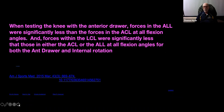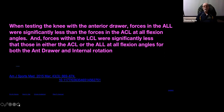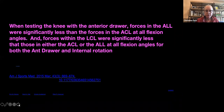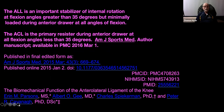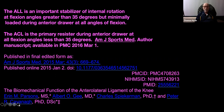The forces of the ALL were significantly less than those of the ACL at all flexion angles, and forces within the LCL were significantly less than those in either the ACL or the ALL at all angles of flexion. Both the anterior drawer and internal rotation would show signs of decreased forces as well. The ALL helps stabilize internal rotation at flexion angles greater than 35 degrees and is a primary resistor during anterior drawer at flexion angles greater than 35 degrees. The included studies will help you read more about its role in knee stability, particularly in the absence of the ACL.